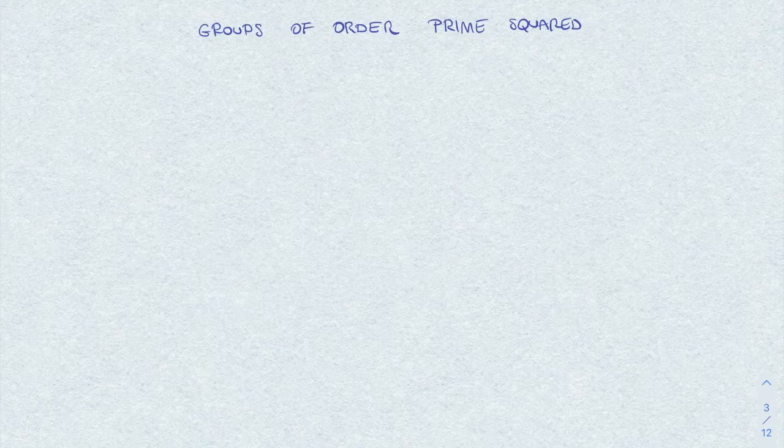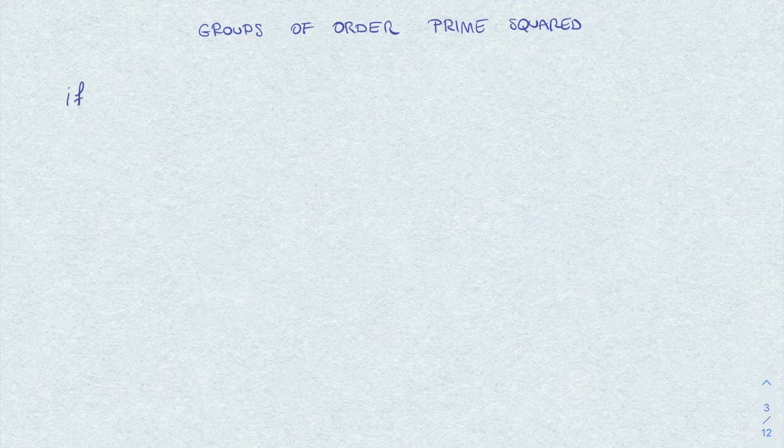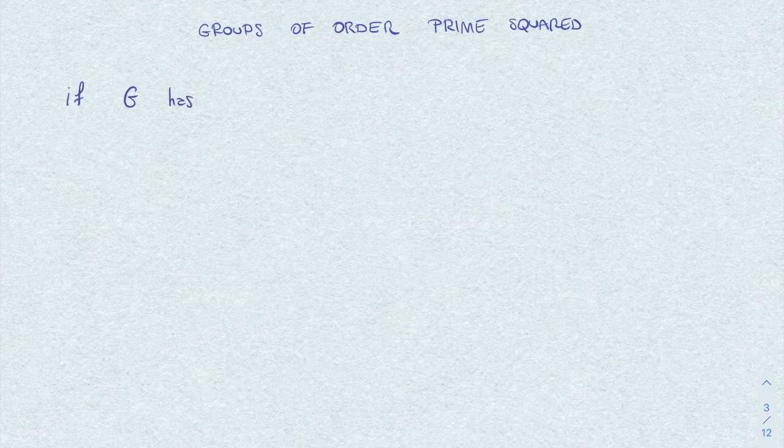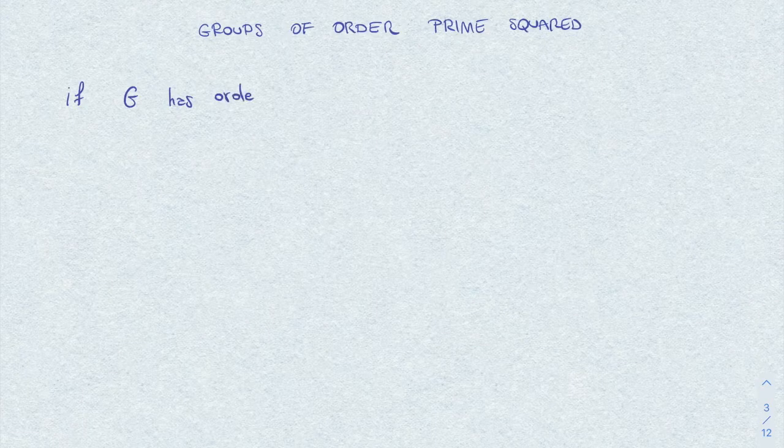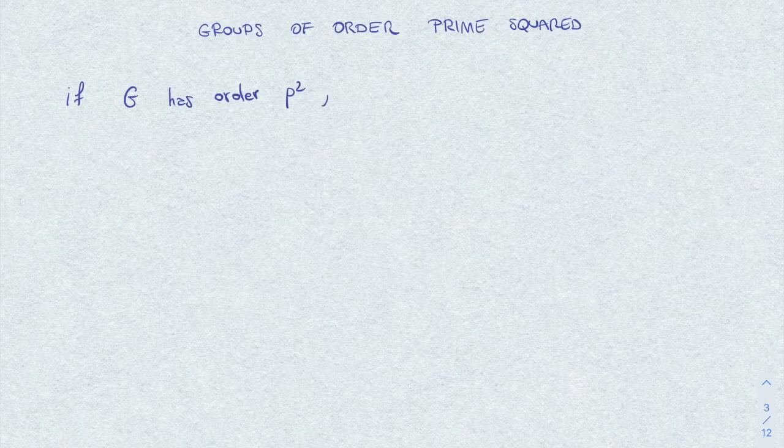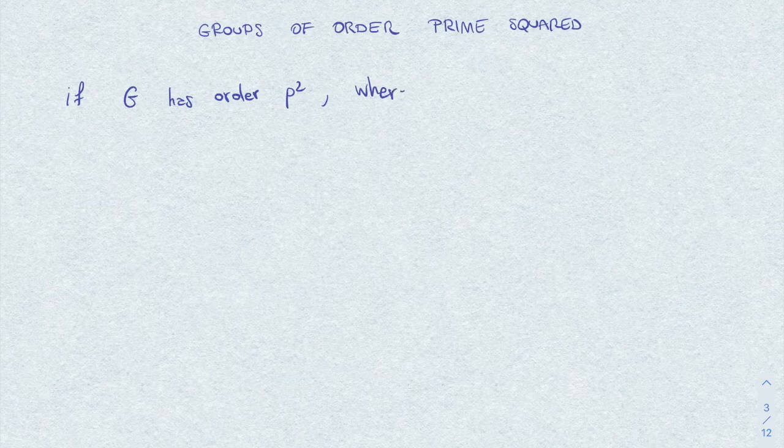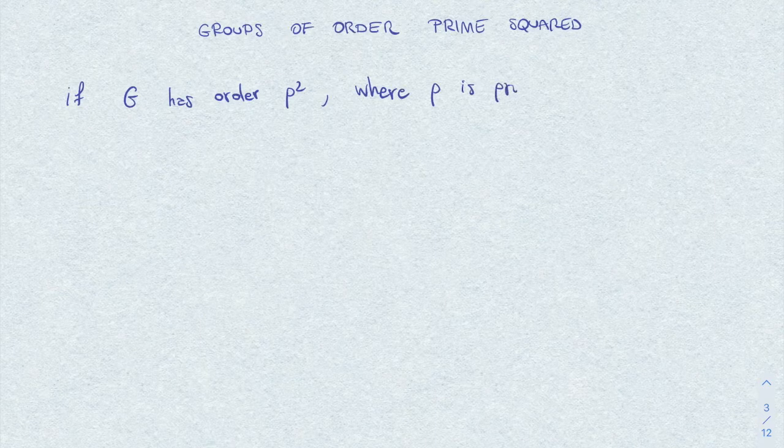For such groups we only have two possibilities, namely either we have a cyclic group of order prime squared, so we know what this is, or it splits as a direct product of two cyclic groups of order p, so the total order is p squared. Precisely the statement is the following: if a group G has order p squared where p is prime,